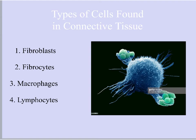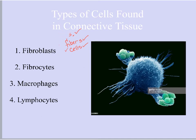Before we go over cells found in connective tissue, let's quickly review the three things required to be considered connective tissue: ground substance, fibers, and cells. We've covered ground substance and fibers; now we'll move on to the different types of cells found in connective tissue. Remember, these three components are found in all connective tissues, though the specific ground substance, fibers, and cells will vary depending on the function of that tissue.